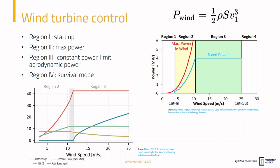If you look at how this power evolves, it increases really fast with wind speed. When you design a wind turbine, you design it for a specific power and it cannot take more than its design power from the wind. At low wind speed, you can get as much power as you want — we multiply the wind power by the Betz limit to get the extractable power. But at a certain speed, the generator cannot take any more power, so we need to keep it constant.